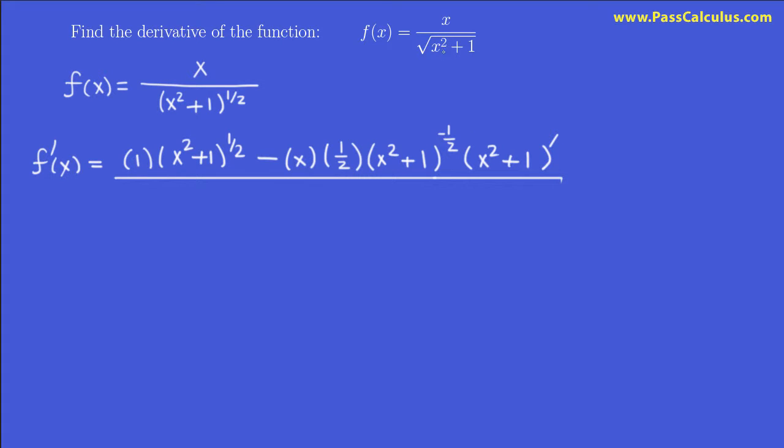And then we square the bottom. The square of this, well, when I square a power of a half, the two times a half gives me one. So it's really x squared to the power of one, or just x squared plus one.